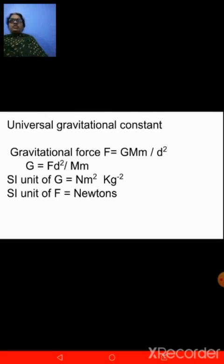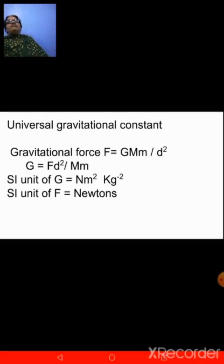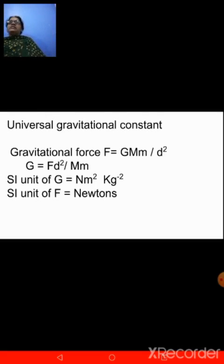The SI unit of force is Newton. So gravitational force F is represented by the formula G into capital M into small m upon D square — D square can be replaced by R square. From this we get the formula for gravitational constant G, which is F·D² upon capital M into small m. The SI unit of gravitational constant is Newton meter square kg raised to minus 2, and the SI unit of force is Newton. You should know the SI units of these terms thoroughly — it is very, very important.